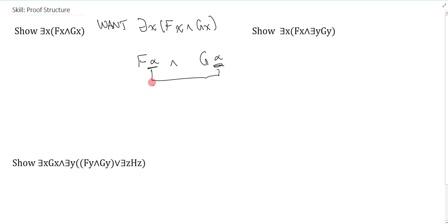The point is what I'm looking for is something such that I get F of something and G of the same thing. And if that's the case, then surely I can generalize to the claim there is something that is both F and a G, because that's all that is really required for an existential generalization.